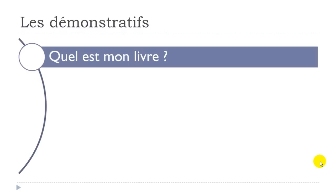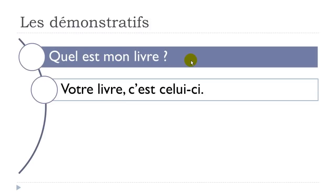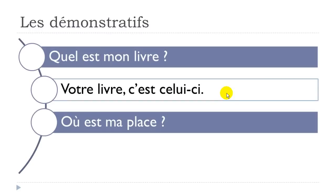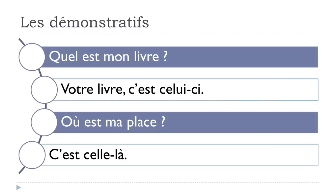Let's see a few examples. If someone asks 'quel est mon livre?' — which one is my book? — the answer could be 'votre livre, c'est celui-ci' — your book is this one — and you point with your finger. Another example: 'où est ma place?' — where is my seat? — 'c'est celle-là' — it's that one — and you point at it at the same time.